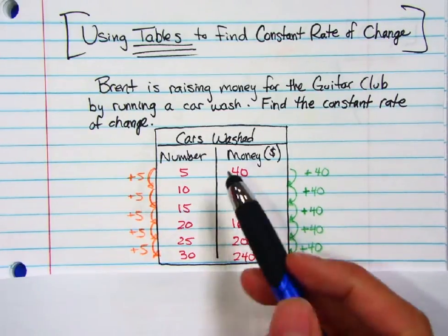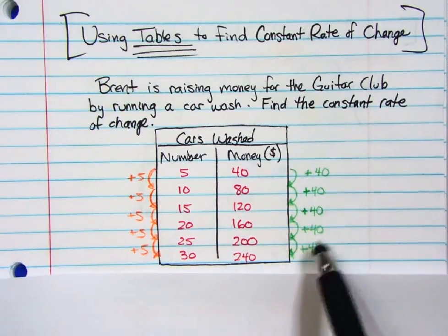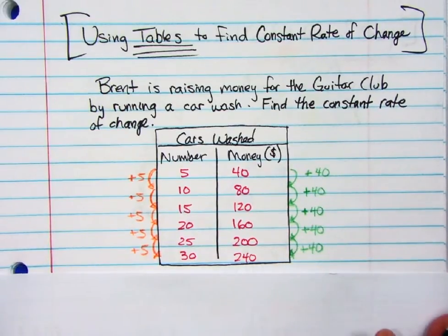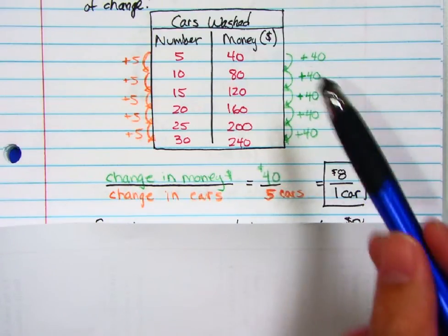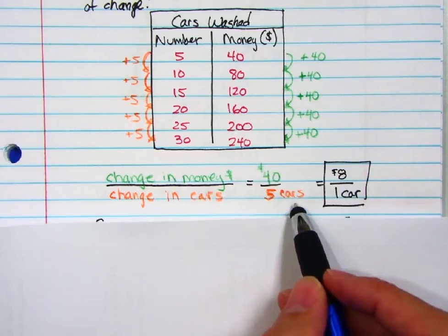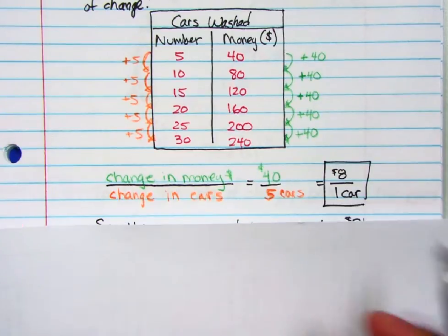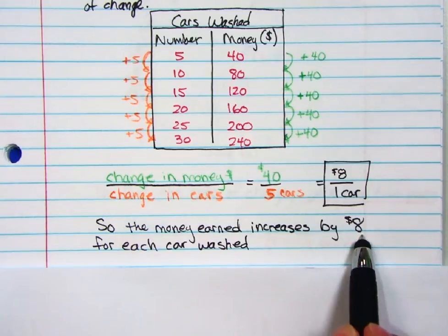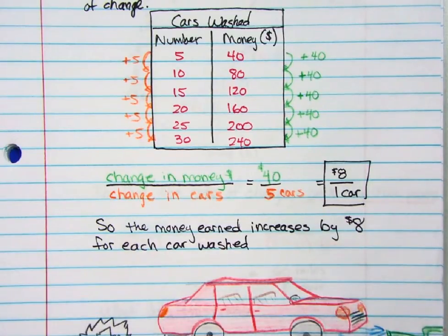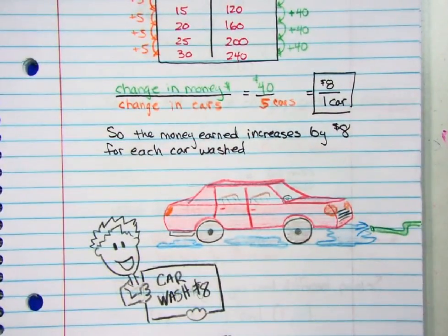What I notice here is that the number of cars is increasing by five. And as those increase by five, the earnings are increasing by $40 — it's constantly making the same exact pattern. So I can take the change in money, which is $40 each time, and the change in cars, which is five. That's a rate, but I want to find a unit rate, so I bring it down to $8 per car. The money earned increases by $8 for each car washed. So as more and more cars are being washed, it's an $8 charge per vehicle — he'd be showing $8 a car.